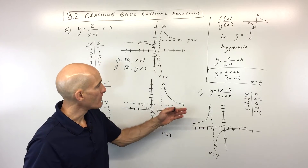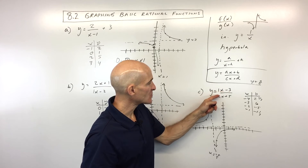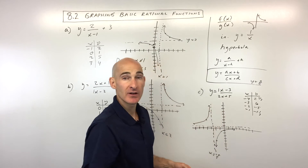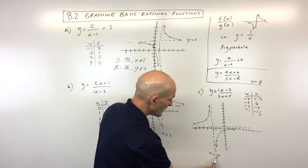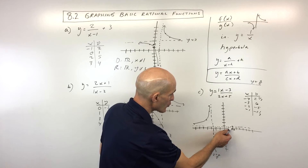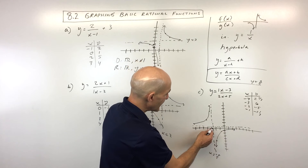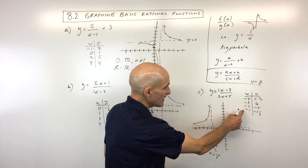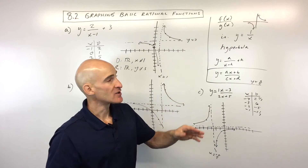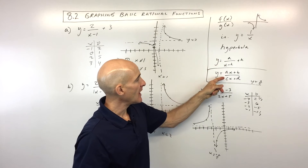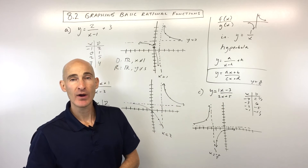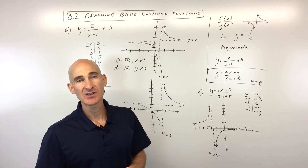For example C, y equals x minus 3 over 2x plus 5: setting the denominator to zero gives x equals negative 2.5, the vertical asymptote. The ratio of coefficients 1 over 2 gives a horizontal asymptote of y equals one half. Points to the left and right of negative 2.5 are plotted to complete the graph. There are two types of rational functions: one with a constant in the numerator, and one with a variable x in both numerator and denominator.